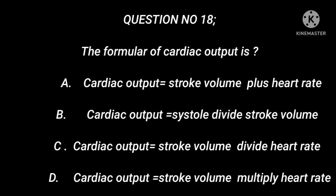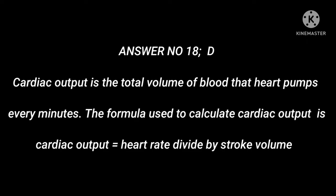Question number 18: The formula of cardiac output is? A. Cardiac output = stroke volume plus heart rate. B. Cardiac output = systole divided by stroke volume. C. Cardiac output = stroke volume divided by heart rate. D. Cardiac output = stroke volume multiplied by heart rate. Answer number 18: D. Cardiac output is the total volume of blood that the heart pumps every minute. The formula used to calculate cardiac output is: cardiac output = heart rate multiplied by stroke volume.